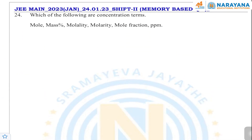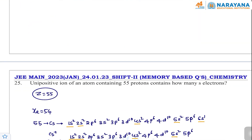The next question asks which are concentration terms. Concentration of a solution can be expressed as mass percentage, molality, molarity, mole fraction, and ppm — but not in moles alone. So mass percentage, molality, molarity, volume percentage, mole fraction, and ppm are concentration terms.